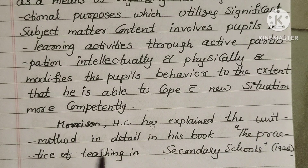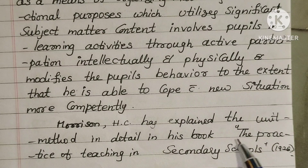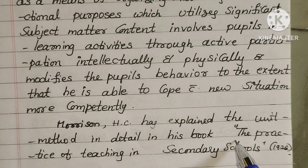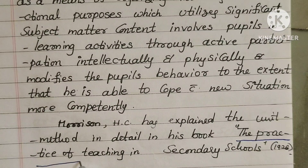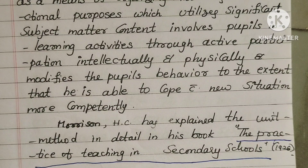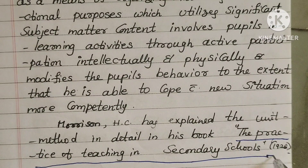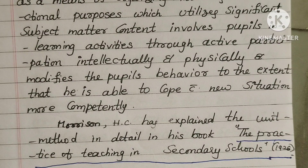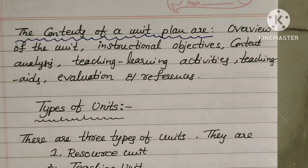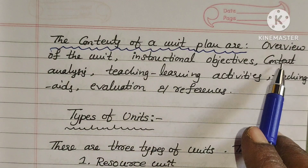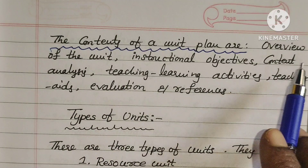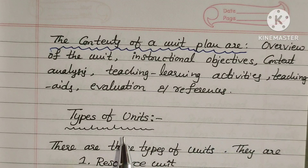Morrison and H.C. explained the unit method in detail in his book 'The Practice of Teaching in Secondary Schools' published in 1926. The contents of a unit plan are: Overview of the Unit, Instructional Objectives, Content Analysis, Teaching-Learning Activities, Teaching Aids, Evaluation, and References.